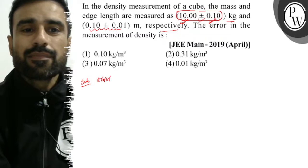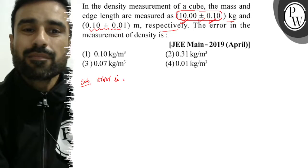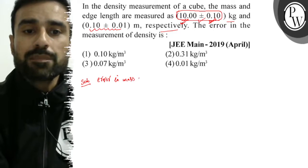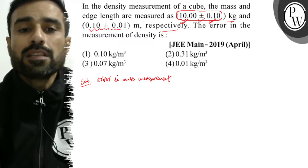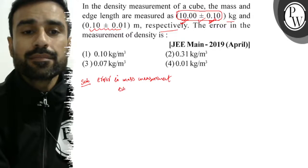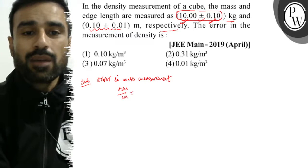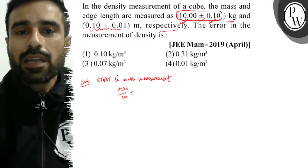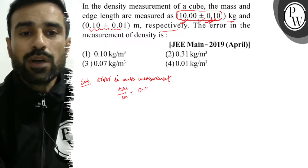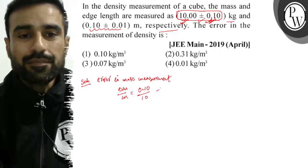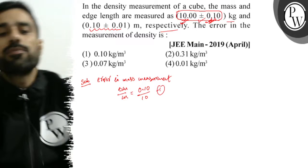That is equal to delta m by m. If you notice, delta m from the data given here is 0.10 upon m is 10. This is the error in measurement of mass.